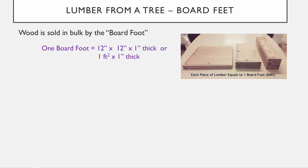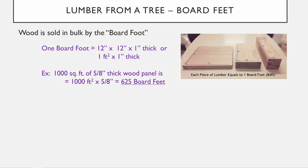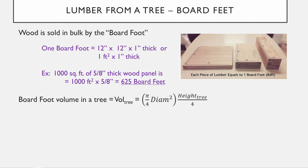For example, if we need 1,000 square feet of five-eighths-inch-thick wood panel — like plywood for a subfloor in a 1,000 square foot single-story house — we take 1,000 times five-eighths and get 625 board feet. The next question is: how many trees do we need to get 625 board feet, which depends on the size of the tree.